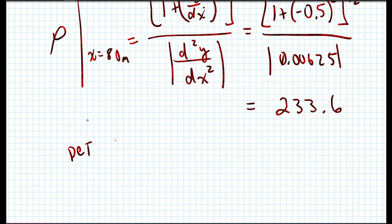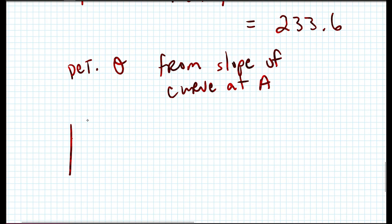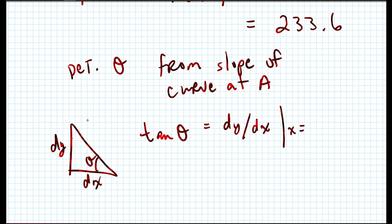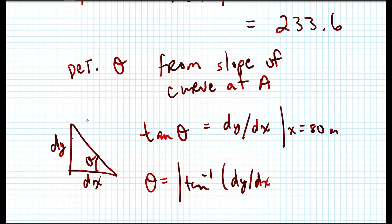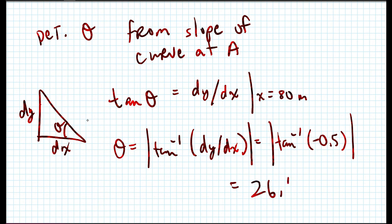We determine θ from the slope of the curve at A. Since tanθ = dy/dx, at x = 80 meters: θ = arctan(dy/dx) = arctan(−0.5) = 26.6 degrees.